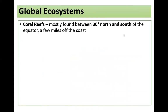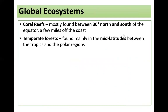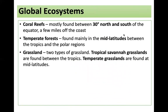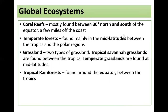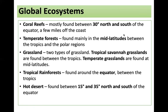Coral reefs are mostly found between 30 degrees north and south of the equator, a few miles off the coast. Temperate forests are found mostly in the mid-latitudes between the tropics and the polar regions. There are two types of grassland: tropical savanna grasslands are found between the tropics, and temperate grasslands are found at mid-latitudes. Tropical rainforests are found around the equator between the tropics. Hot deserts are found between 15 and 35 degrees north and south of the equator. Polar biomes are found at the north and south poles.